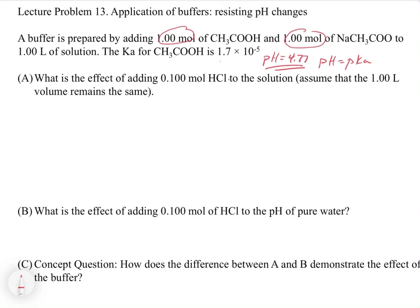We've made this acetic acid/acetate buffer and it's sitting there. Now let's look at what the effect of adding 0.1 moles of HCl to the solution would be. Assume a one liter solution with volume staying the same. So we're going to have a total volume of one liter at the end, and now we have to ask what that HCl is going to react with.